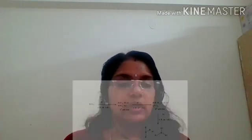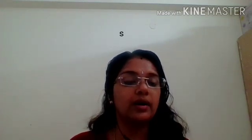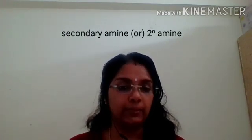From the primary amine, if we replace one more hydrogen atom by an alkyl or aryl group, we will get a compound as R2NH or Ar2NH. These amines are termed secondary amines or 2° amines. The main functional group in the secondary amine is the amino group, that is the NH group.